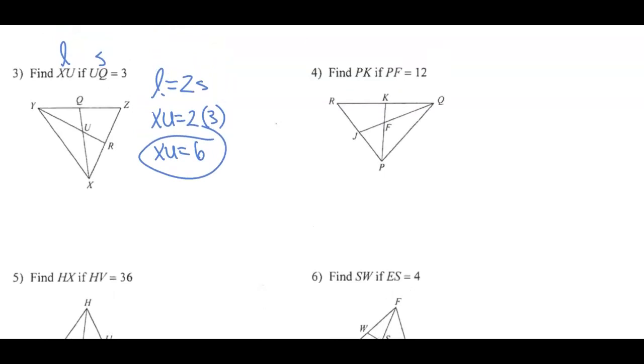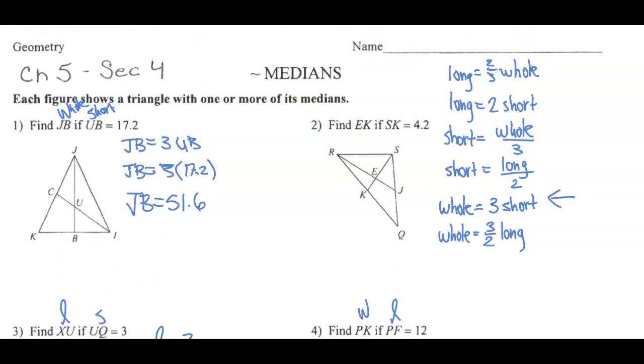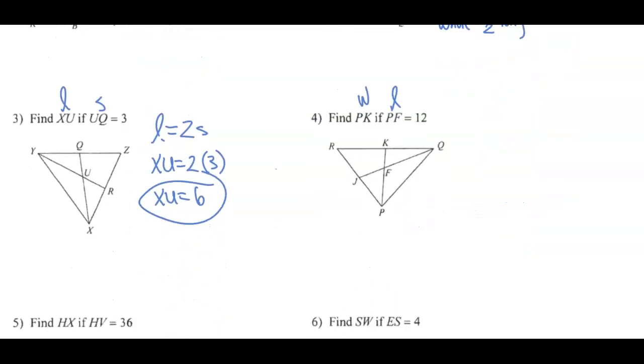And we'll check out this one here. PK, check in number four. PK is the whole. PF is the long. How can we find the whole if we know the long? The whole is three halves of the long. So, PK is three over two times twelve. We can crisscross this. This is going to be one. Two goes into twelve six times. Three times six is eighteen. PK is eighteen.